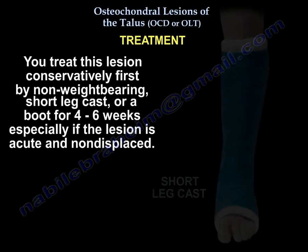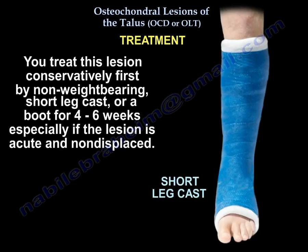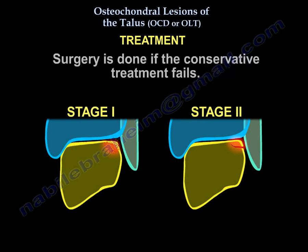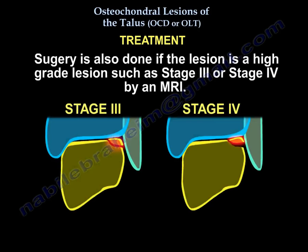Treatment begins conservatively with non-weight bearing, a short cast or boot for 4 to 6 weeks, especially if the lesion is acute and non-displaced. In general, lower-grade lesions — Stage 1 or 2 — are treated conservatively. Surgery is performed if conservative treatment fails, or if the lesion is high grade, such as Stage 3 or 4 on MRI.